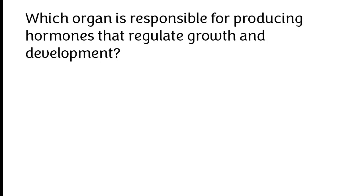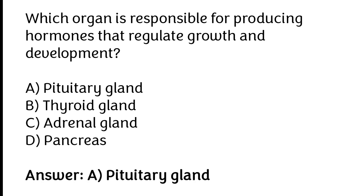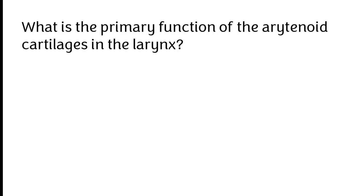Which organ is responsible for producing hormones that regulate growth and development? Pituitary gland, thyroid gland, adrenal gland, pancreas. The correct answer is option A — the pituitary gland is responsible for producing hormones that regulate growth and development.